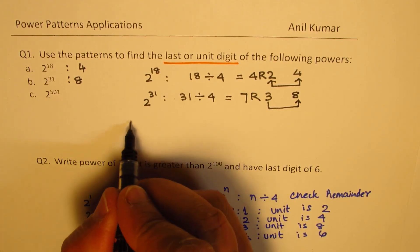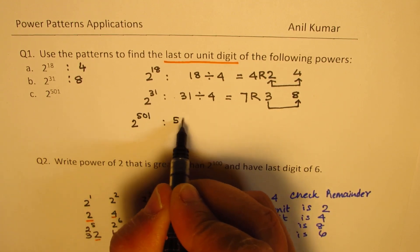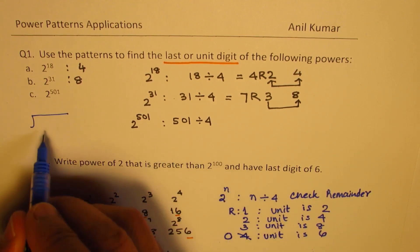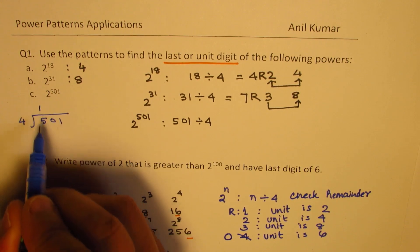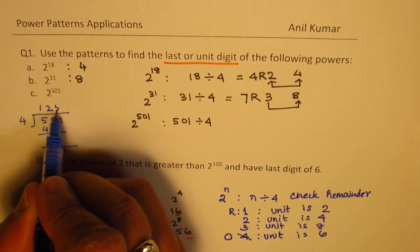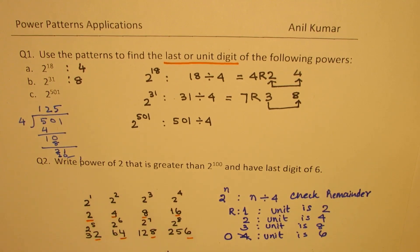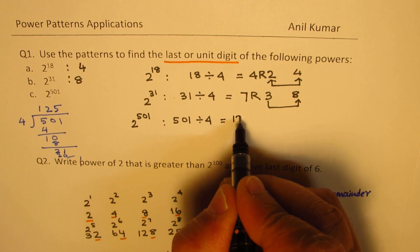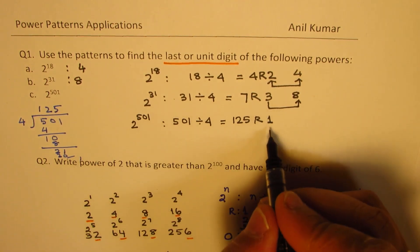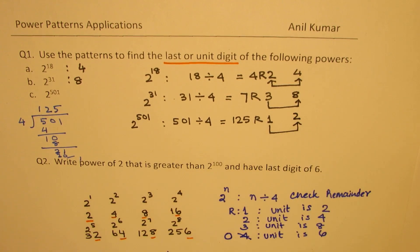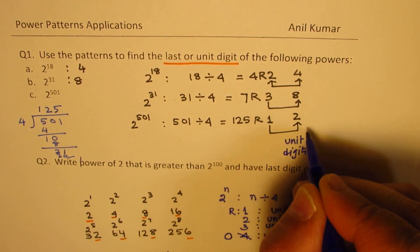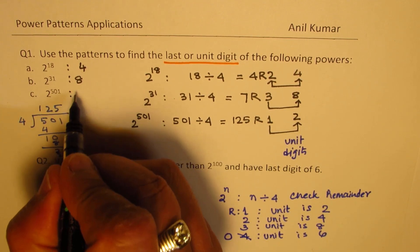And for 501, so when you do 2 to the power of 501, then divide 501 by 4. So, if it is a difficult division, you can do it on the side. So, we are dividing 501 by 4. So, 4 times 1 is 4. We get 10 here. 4 times 2 is 8, and we get 2. Bring down 1. 4 times 5 is 20. And so, the remainder is 1. So, we can write this as equal to 125, the remainder 1. Since the remainder is 1, the unit place should be 2. So, we get this answer as 2. So, these are unit digits, the last digits, which we have shown above.